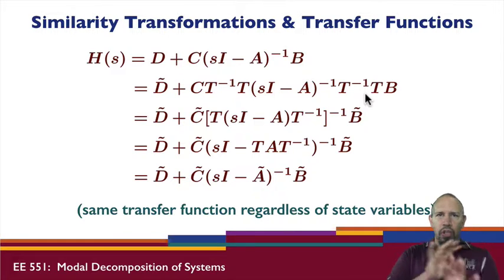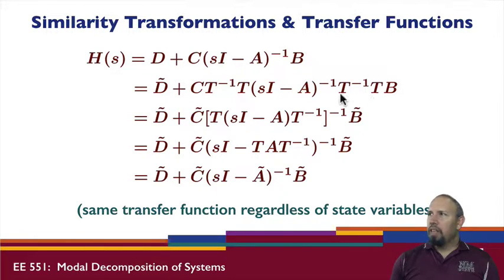You basically reorder the matrices and invert them. This one gets moved over here and inverted, this one gets moved over here and inverted, this one is inverted and stays in the middle. I can now distribute the T and the T inverse throughout. T times T inverse times I just leaves I.